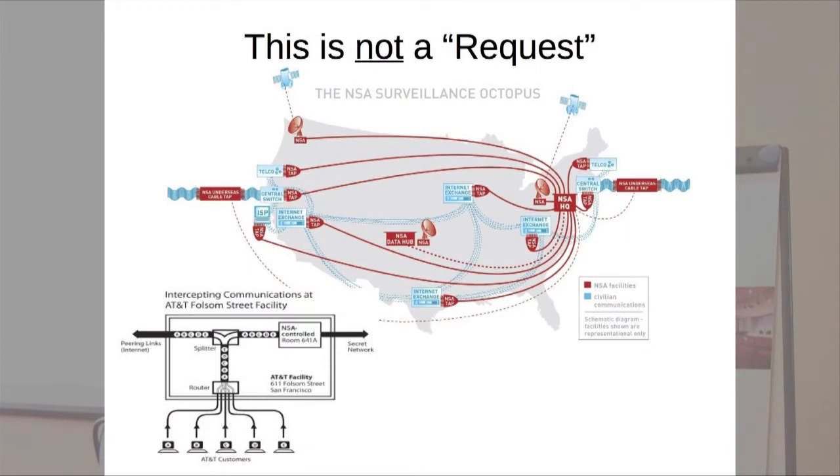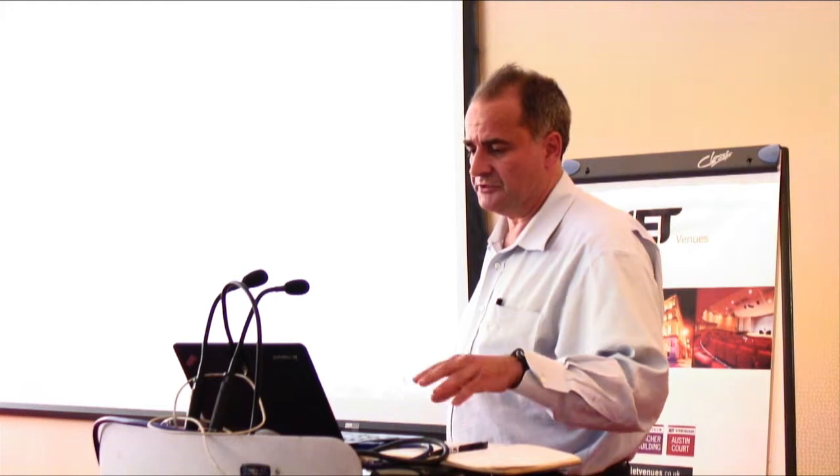This is not a request. This is a diagram produced by the American Civil Liberties Union about 2006, which they call the NSA Surveillance Octopus, and it's extrapolating from documentation that Mark Klein brought with him. There's a diagram there of the splitter in room 641A. Basically, by looking at that documentation, they were able to extrapolate that probably this splitter room didn't just exist in San Francisco. It existed in many of the other major switching centers as well.